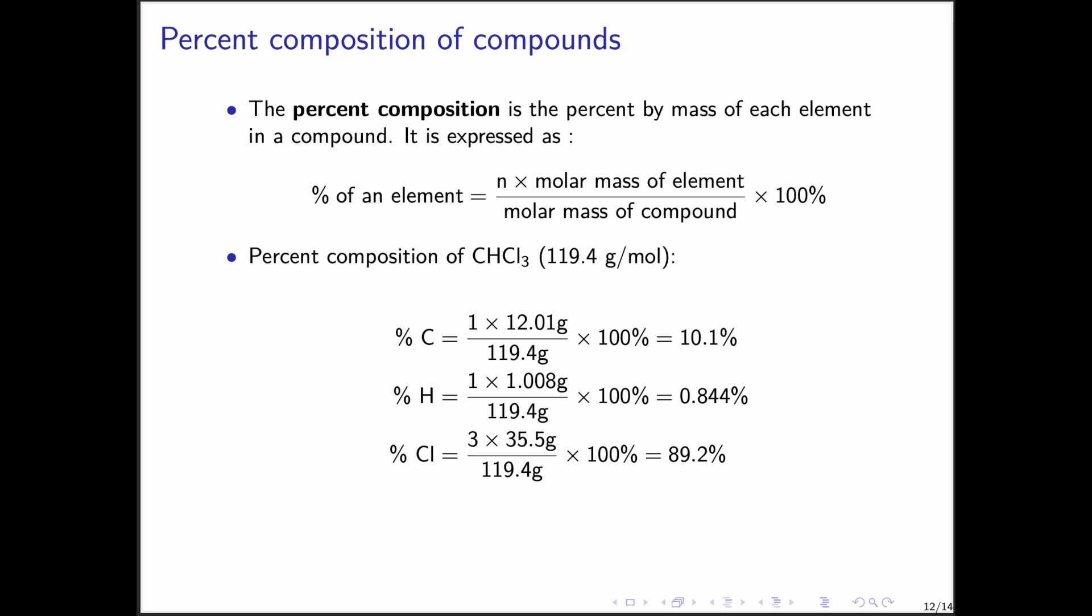Another important concept is percent composition, which tells us the percent by mass of each element in a compound. For example, in one mole of CHCl3, which weighs 119.4 grams, carbon contributes 12.01 grams, which corresponds to 10.1 percent. Hydrogen contributes 1.008 grams, which corresponds to 0.84 percent. And chlorine contributes 106.5 grams, which corresponds to 89.2 percent. We observe that chloroform is mostly chlorine by mass.